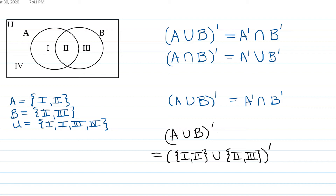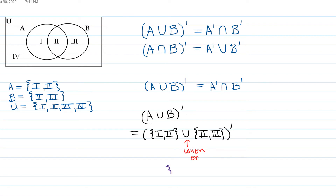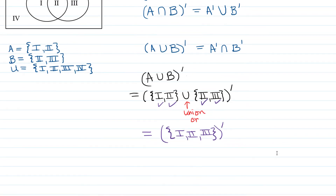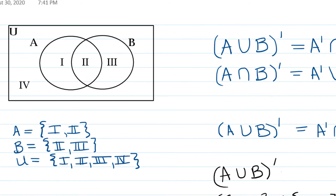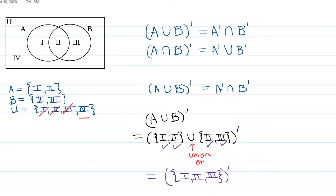Just like in algebra, we work inside the parentheses first. Union means we unite the two sets into one big set — anything in one set or the other is included. That gives us the set containing I, II, and III. The complement symbol means what's not in that set but is in the universal set. Taking I, II, and III out of the universal set, what's left is just region IV.